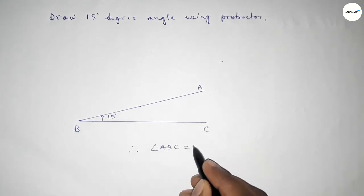Therefore angle ABC equals 15 degree angle. That's all, thanks for watching. If this video is helpful to you then please share it with your friend. Thanks for watching.